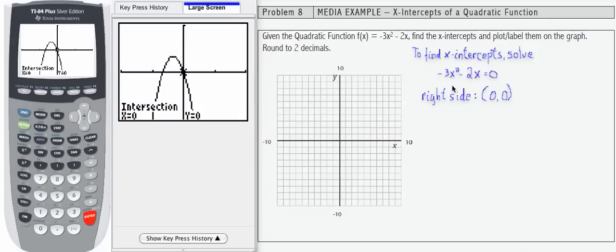So our right-side intersection, our x-intercept, is 0, 0. Let's go ahead and put that on our graph.